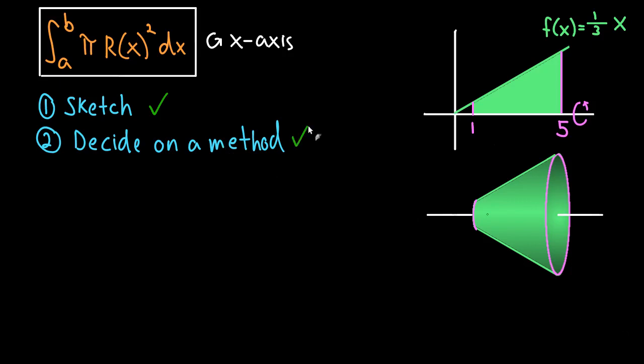But in this case, I'm telling you we're going to use the disk method, so this decision is made for us. Again, this is our first example, so I'm keeping it easy here.